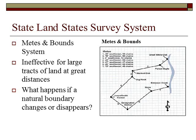Prior to the Land Ordinance of 1785 and the Rectangular Survey System, the state land states — which would be the 13 colonies — organized and surveyed their land with the Metes and Bounds System.